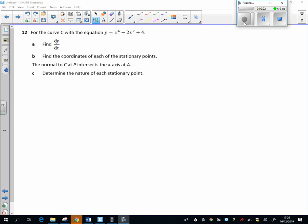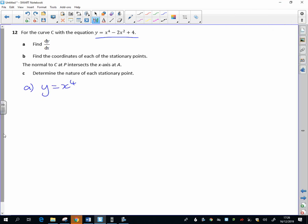The first part asks me to find dy/dx, and it's quite a nice one. There's no simplifying to do first. So if y is x to the power of 4 minus 2x squared plus 4, then dy/dx - I multiply by the 4, reduce the power by 1, multiply by the 2, reduce the power by 1, and the 4 will just differentiate to nothing.